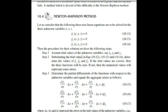Substitute the trial values into this equation, then determine the values of f1, f2, and f3. If the trial values are correct, then the function values will be equal to zero — that means f1 = 0, f2 = 0, and f3 = 0. But if they are not correct, some numerical value will appear, indicating there is an error in your assumed trial values of x, y, and z.